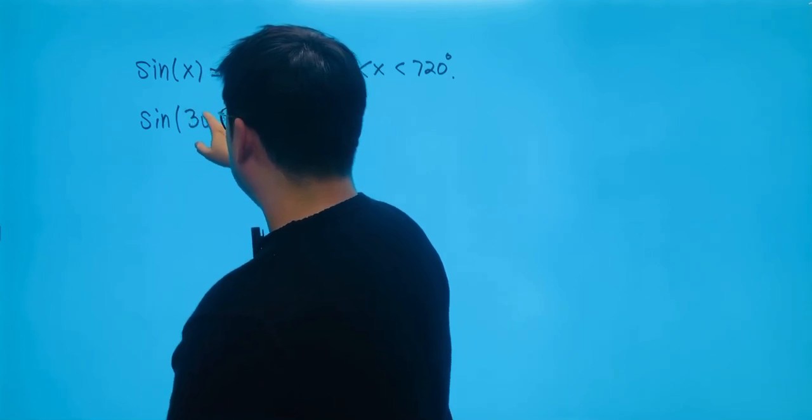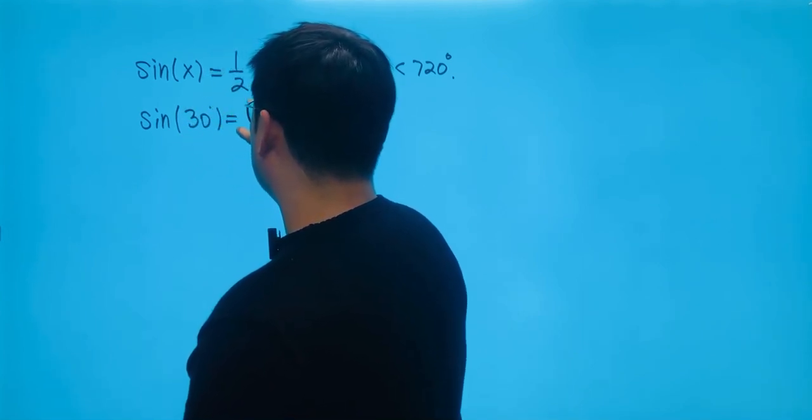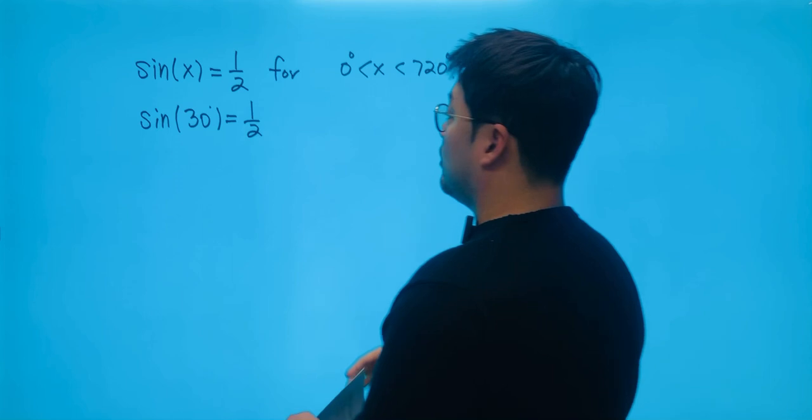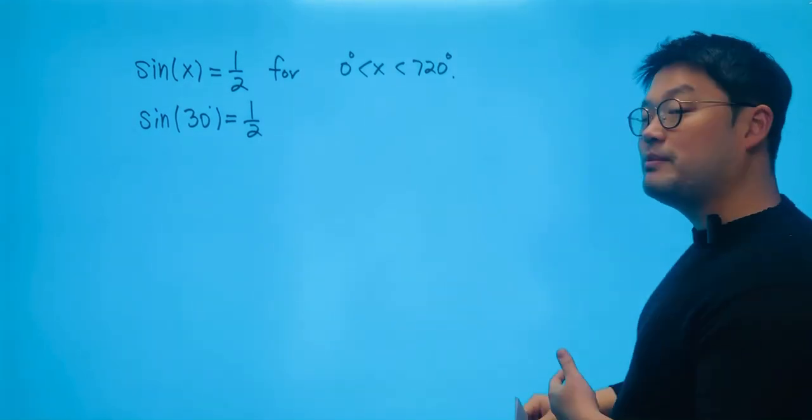So in other words, this is an obvious picture from the special right triangle. We know that sine 30 is just going to be one-half.